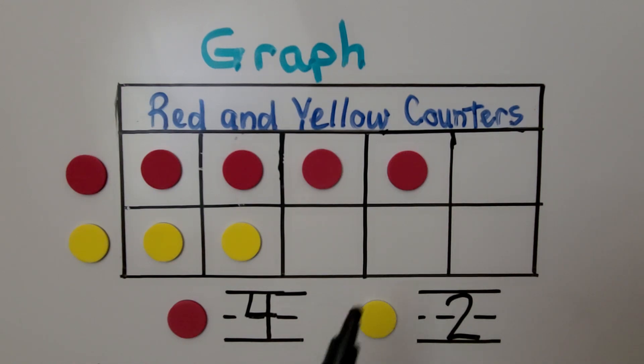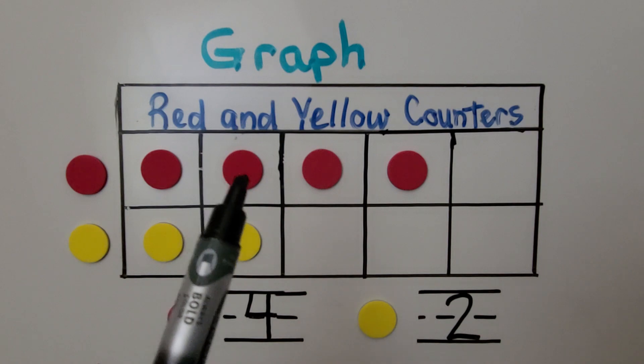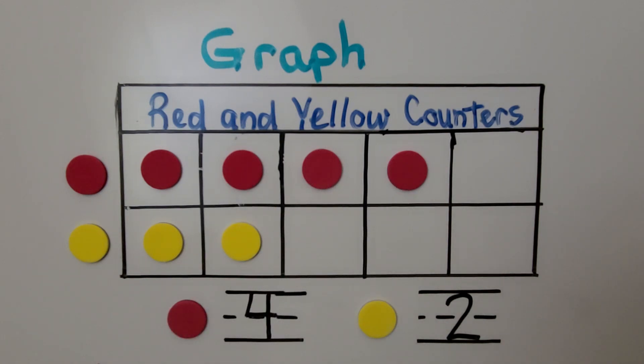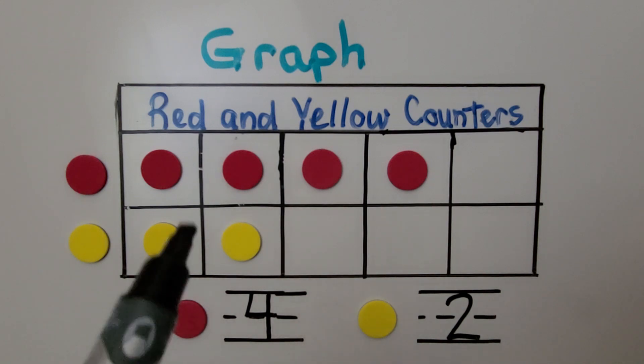The red row sticks out farther than the yellow row. There are one, two, three, four red counters, and one, two yellow counters. We don't count these outside. These are the picture labels. We only count what is in the boxes.